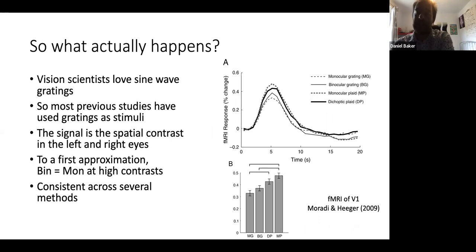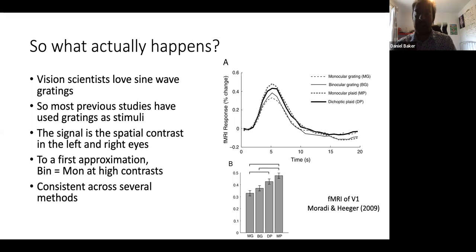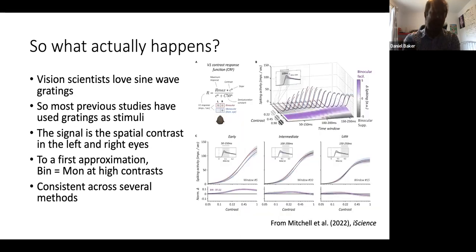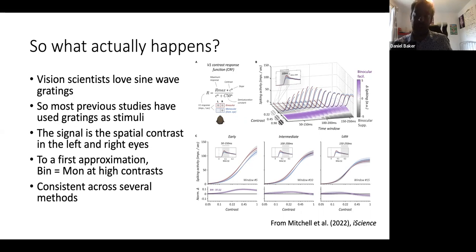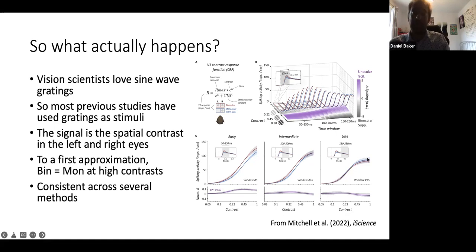The same is true when we measure with MRI. Here are data from a paper by Maradi and Higa in the Journal of Vision. The key conditions are the monocular grating and binocular grating conditions — the first two bars in the bar charts — and those data look very similar across monocular and binocular conditions. Here are more recent data from a macaque neurophysiology study published this year in iScience by Mitchell et al., looking at the time course of responses to monocular versus binocular stimuli. There seems to be a slight binocular advantage very early on around the first 100 milliseconds, but by 150 milliseconds those two curves very much overlap. Again, binocular equals monocular at high contrasts in V1.